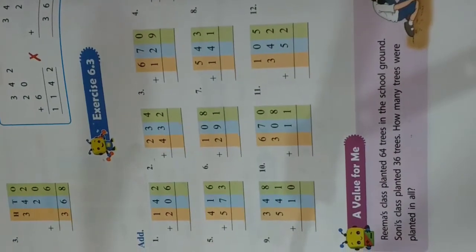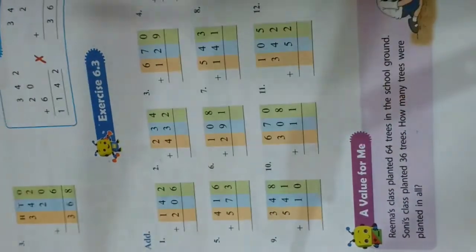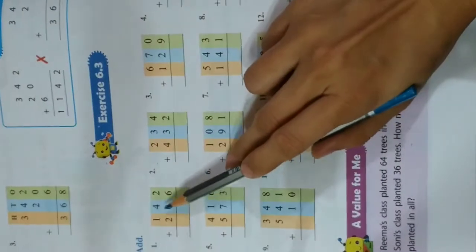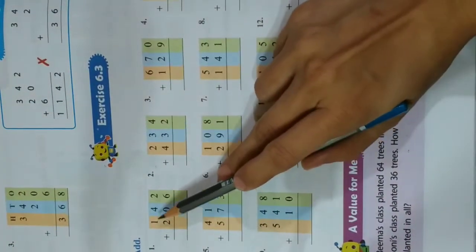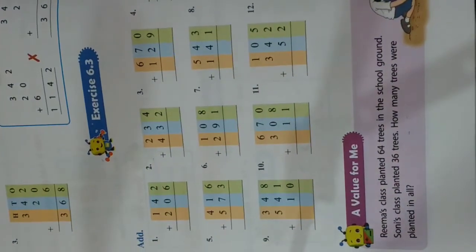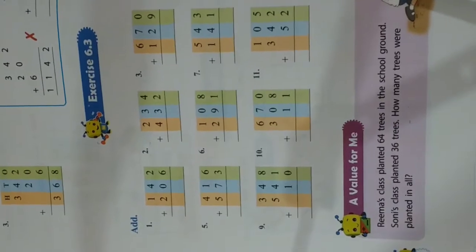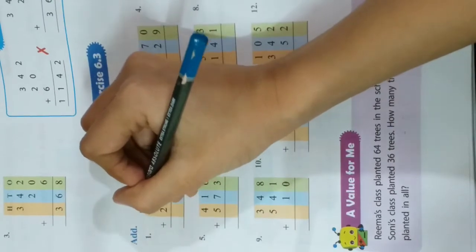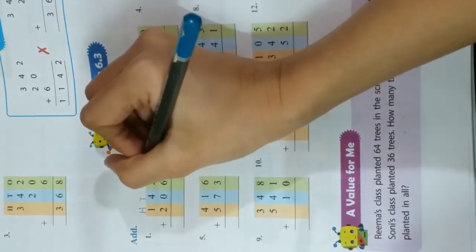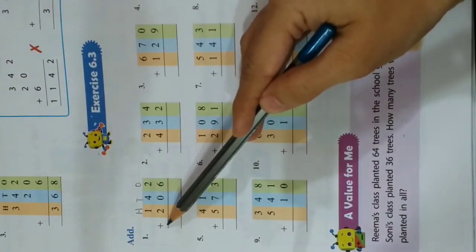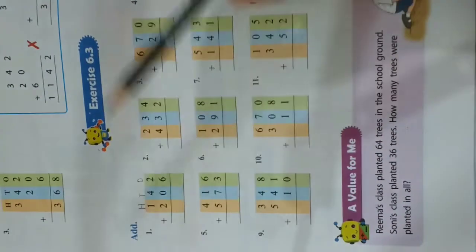Now you can see what is written over here — Add. Add means you simply have to do addition. These are sums in which the numbers are of three digits, so it is three-digit addition, children. It is also very simple. We will begin by writing H-T-O on top. Plus sign is given, so it means you have to add.